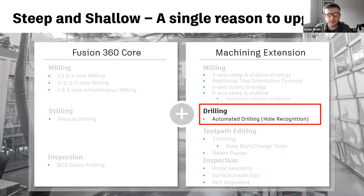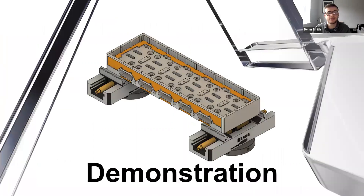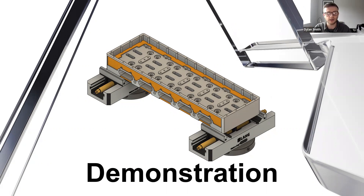We are going to be looking at hole recognition and why that alone is a reason to upgrade to the machining extension. But first, what is hole recognition? It's an automation tool that intelligently analyzes your model and finds hole signatures. When we talk about hole signatures, we're referring to the different hole types that make up a hole pattern. So if we imagine a counterbore hole — it's made up of a bigger hole connected to a smaller hole — we would define that as a hole signature. It then uses templates to apply appropriate drilling operations to create that hole signature in three and/or five axis.